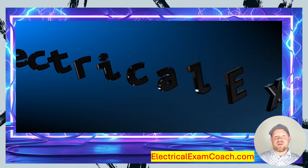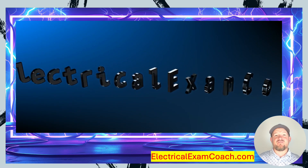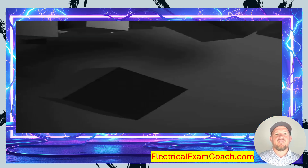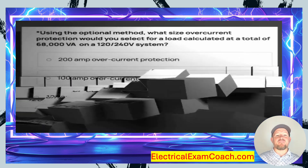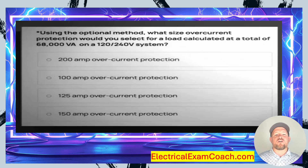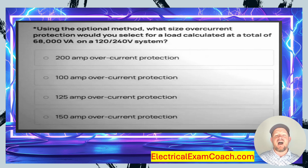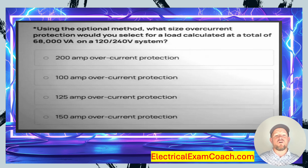Welcome back. I am the Electrical Code Coach from ElectricalExamCoach.com and this is the question of the day. When using the optional method, what size overcurrent protection would you select for a load calculated at a total of 68,000 VA on a 120/240 volt system? Option A is 200 amp overcurrent protection.